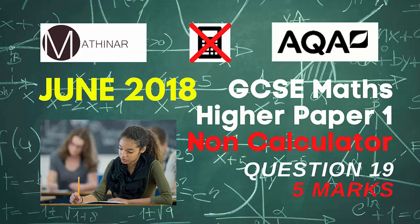Hello and welcome. In this video, we will be looking at the AQA GCSE Maths Higher Paper 1, which is the non-calculator paper from June 2018. We are looking at question number 19, which is worth a total of 5 marks.